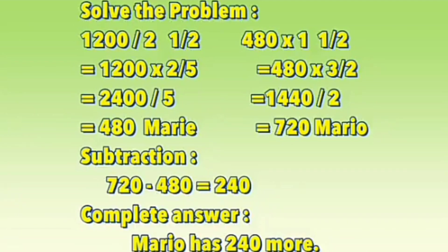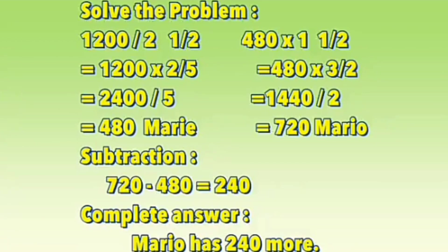Next, we are going to solve how much for Mario's amount. We multiply 480 times one and a half, so 480 times 3/2. Then 480 times 3 equals 1440, divided by 2 equals 720 for Mario.